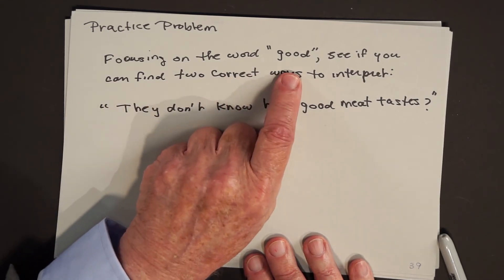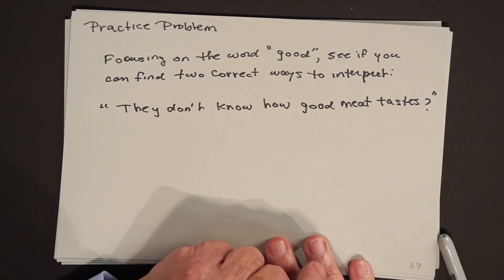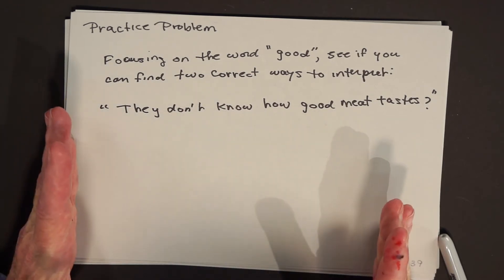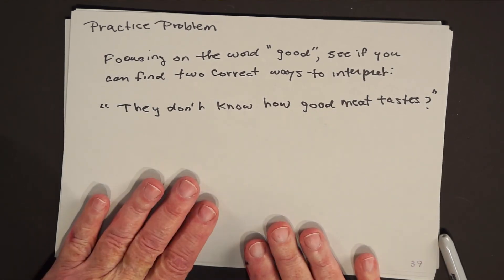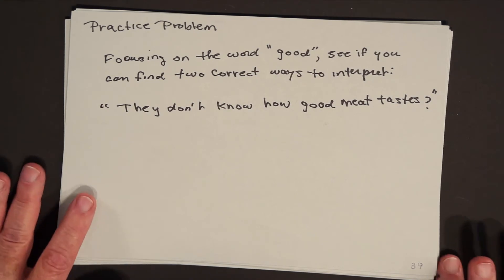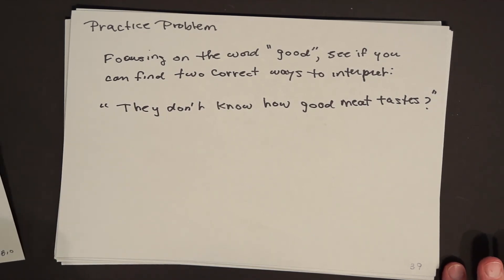Here's the practice problem. Focusing on the word 'good,' see if you can find two correct ways to interpret: 'They don't know how good meat tastes.' Pause the video, and then come back to watch the rest of the lecture where I give you my interpretation of the solution.